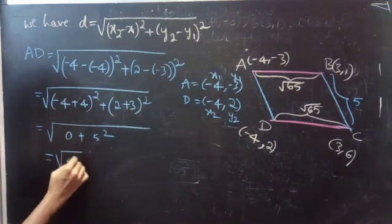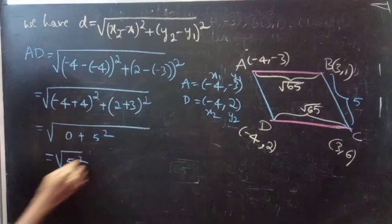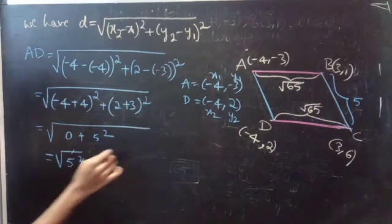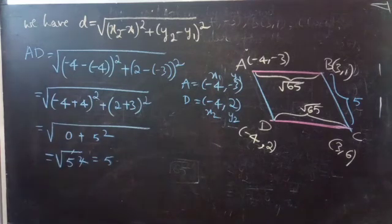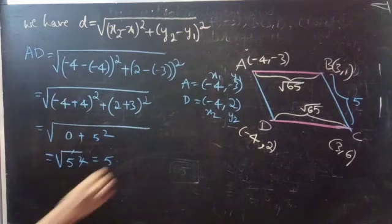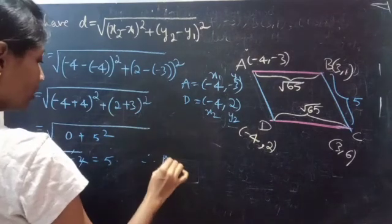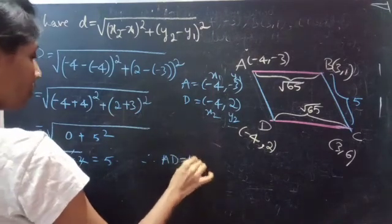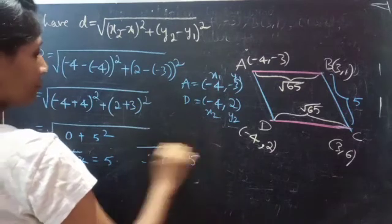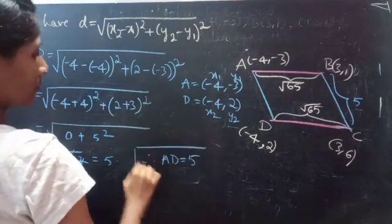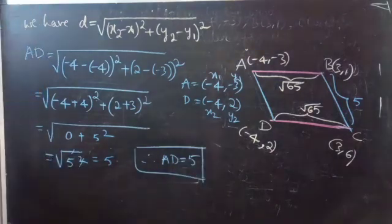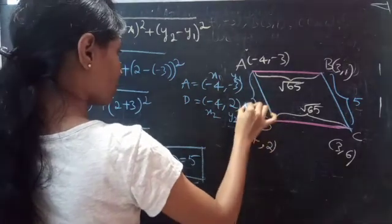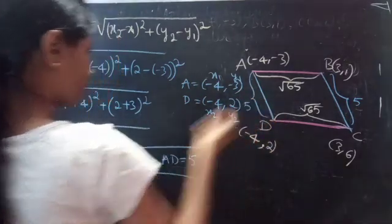This equals square root of 5 squared, and the square root gets cancelled. So finally we get the answer 5. Therefore, AD equals 5.